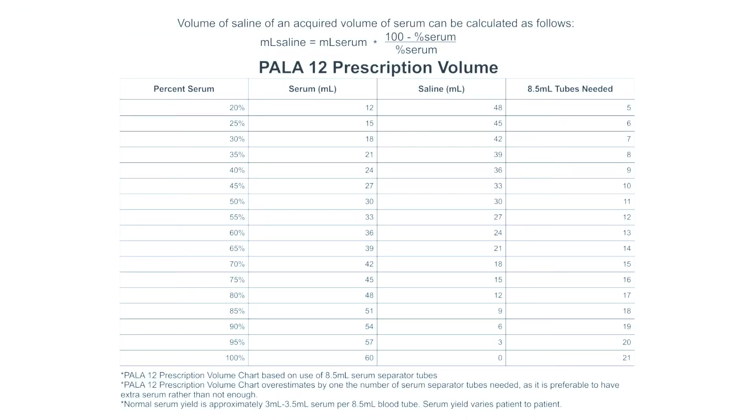Review the Paula 12 prescription volume chart to determine the correct volume of saline and blood serum to be mixed. The total volume of the 12 eye drop bottles is 60 milliliters.